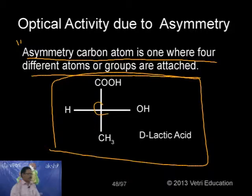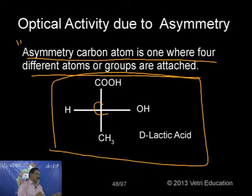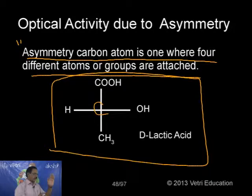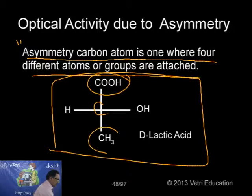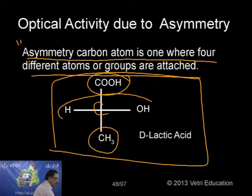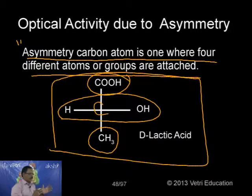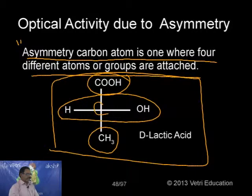A specific example here: D-lactic acid. This is the conventional method of showing Fischer projection - a three-dimensional molecular model represented by Fischer in two-dimensional form. In the vertical groups there is a COOH group on top and CH3 on the bottom. In the horizontal group, the left side is hydrogen and the right side is OH. There are four different groups, so it is called an asymmetric carbon - D-lactic acid has an asymmetric carbon.